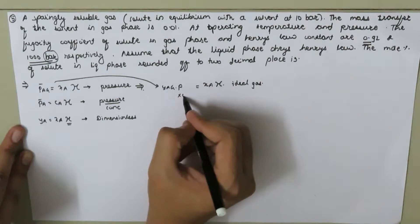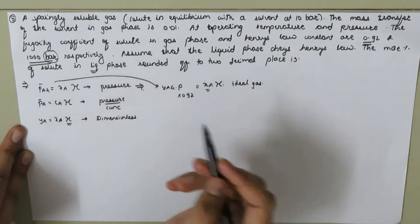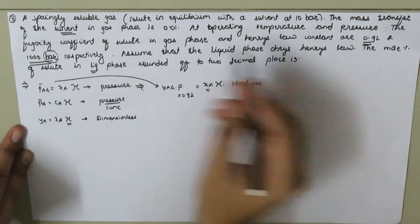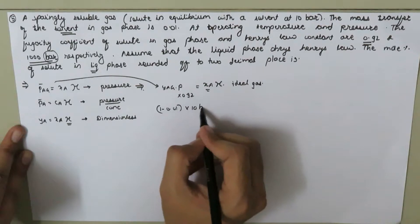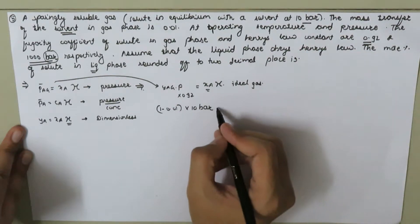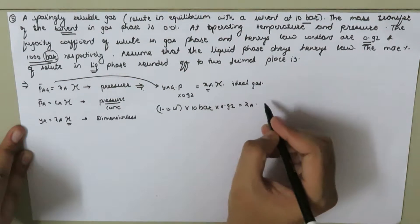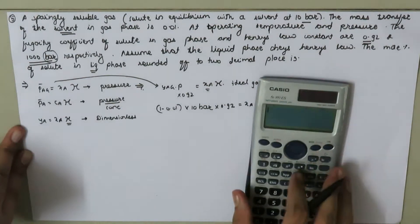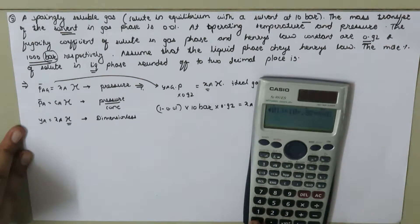We multiply by 0.92 to account for non-ideal behavior. We need to find the mole percent of the solute in the liquid phase. Since 0.01 is the mole fraction of the solvent in the gas phase, the mole fraction of the solute in the gas phase is (1 − 0.01). The total pressure is 10 bar. So the equation becomes: (1 − 0.01) × 10 × 0.92 = x_A × 1000 bar.